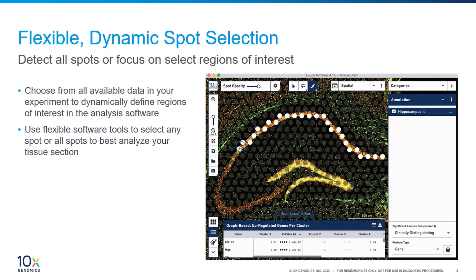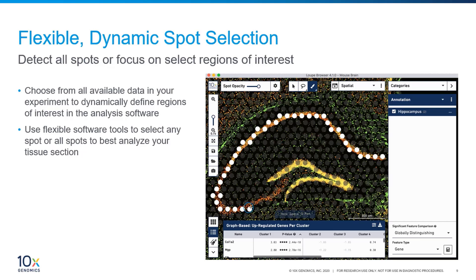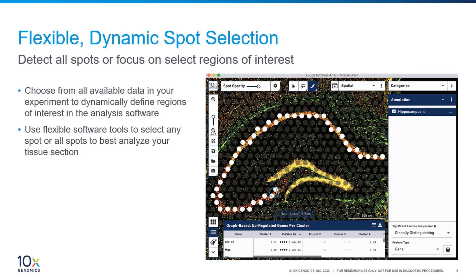Here we have a representation of how you might analyze your data with Loupe Browser. In this example we have a mouse brain section where we can visually identify the hippocampus, shown by the C-shaped structure in orange. To identify all the genes that are upregulated in the hippocampus, simply select the spots that overlay onto this structure. As we have transcriptomic expression information for each of these spots, the software can perform analysis such as differential gene expression between the selected spots and the rest of the sample.